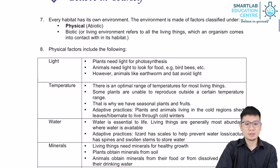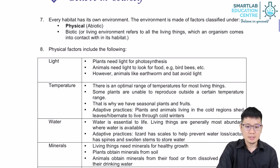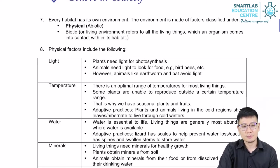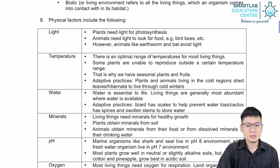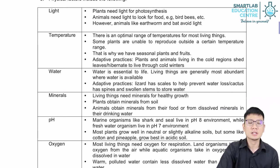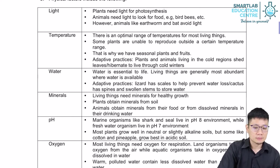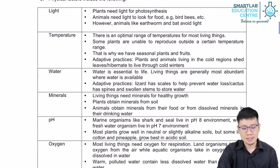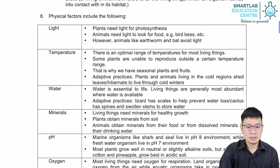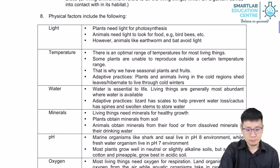Every habitat has its own environment. The environment is made of factors classified under both physical, also called abiotic, and biotic — the living things. The physical factors are things like light, temperature, water, minerals, the pH of water, and oxygen levels in the water or in the air. These are all things necessary for different forms of life to survive. They are not living factors, which is why we call them physical factors or abiotic factors.